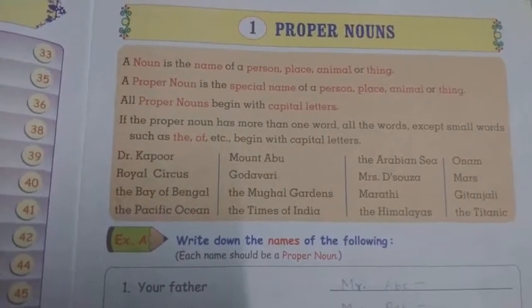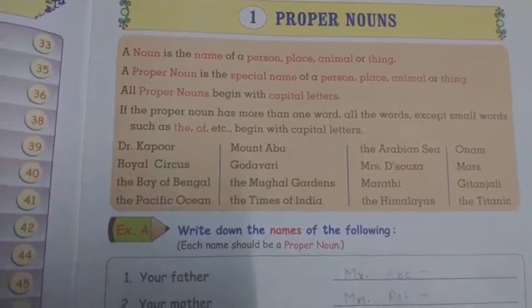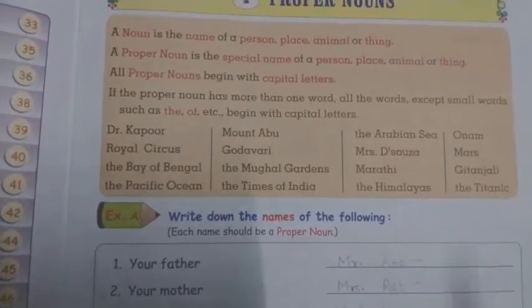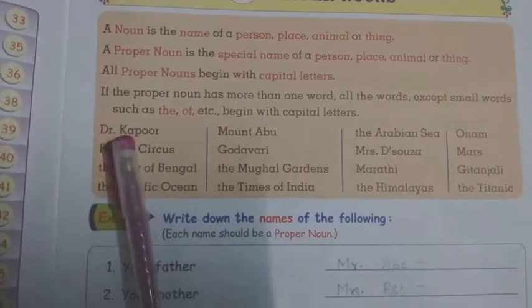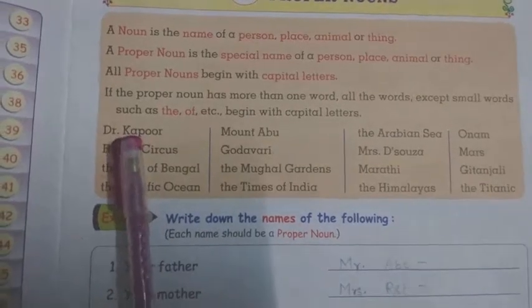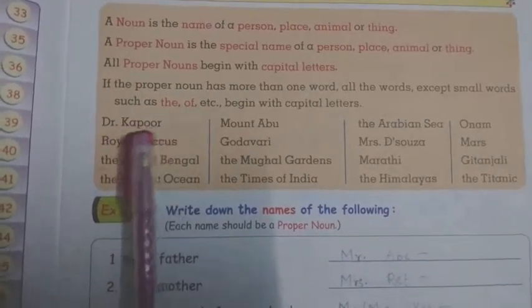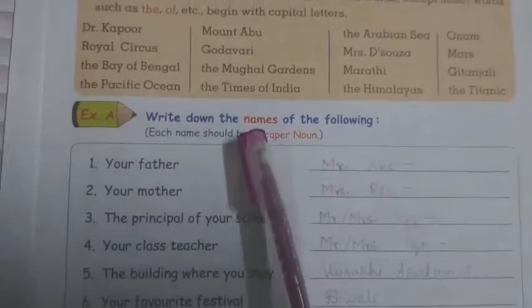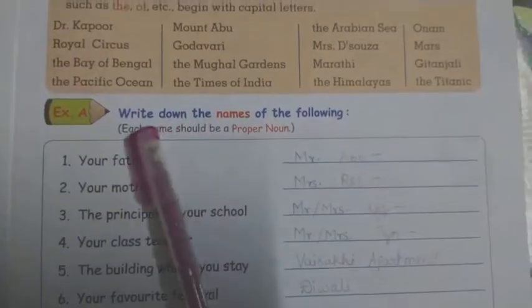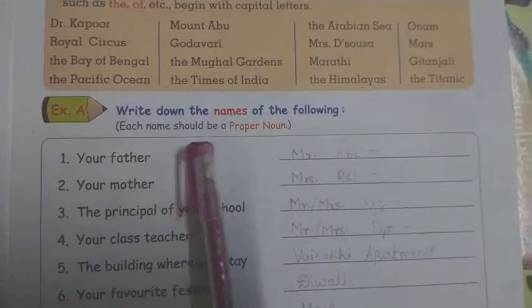One thing you have to remember: all proper nouns begin with capital letters. For example, Dr. Kapoor — the K in Kapoor is a capital letter. So we have to write names with capital letters. Here is an exercise: write down the names of the following. Each name should be a proper noun, meaning a specific, special, or particular name.